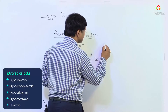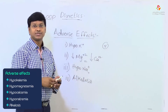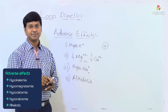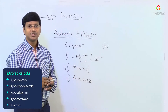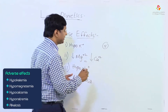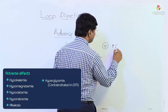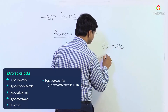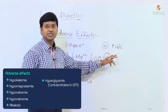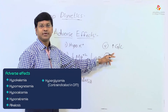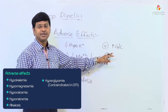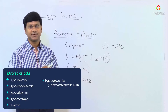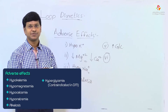These loop diuretics are contraindicated in diabetes mellitus patients because they cause hyperglycemia. Due to the risk of hyperglycemia, they are contraindicated in patients with diabetes mellitus.